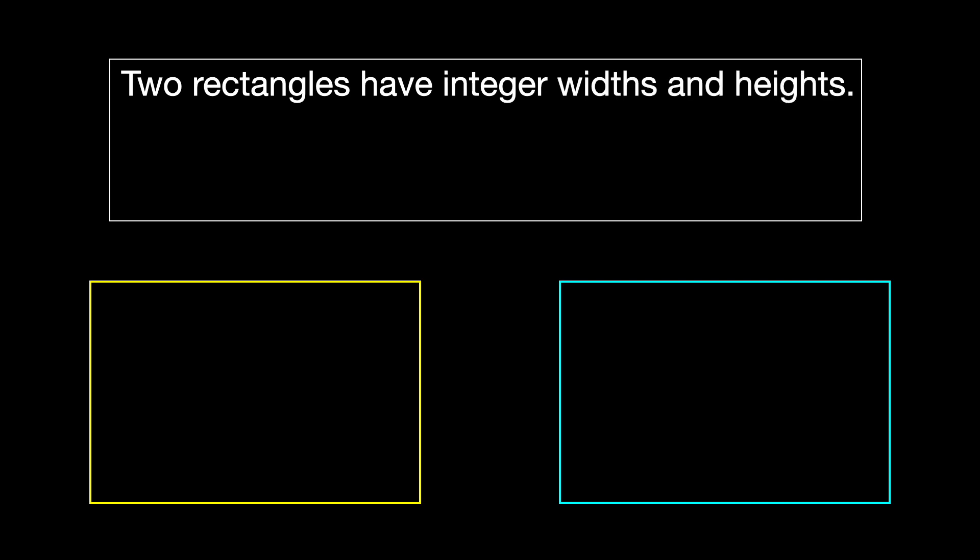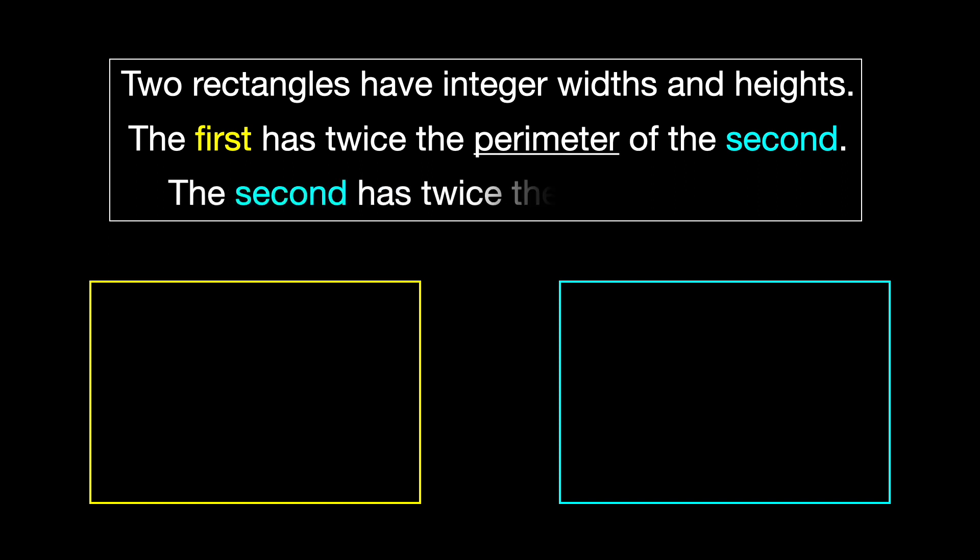Today, I'd like to show you a simple but surprisingly interesting mathematical puzzle. Two rectangles have integer widths and heights. The first has twice the perimeter of the second, and the second has twice the area of the first.